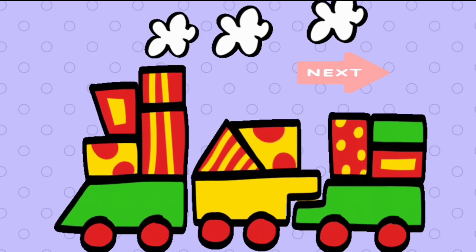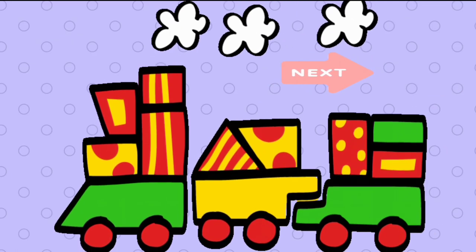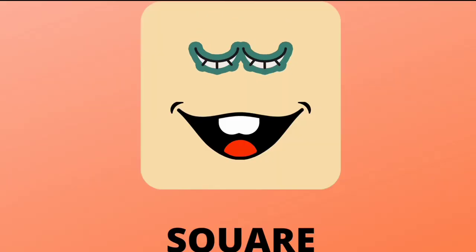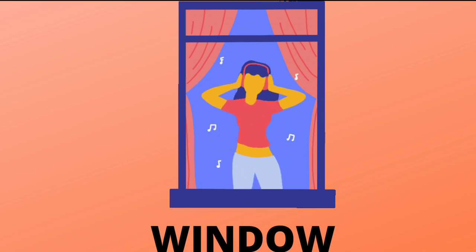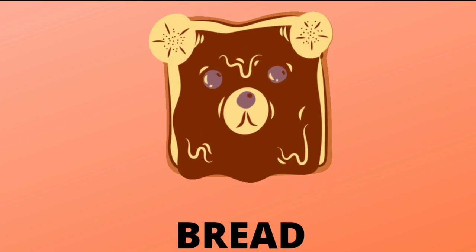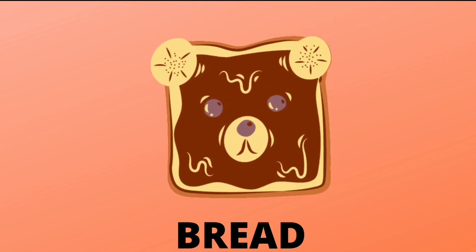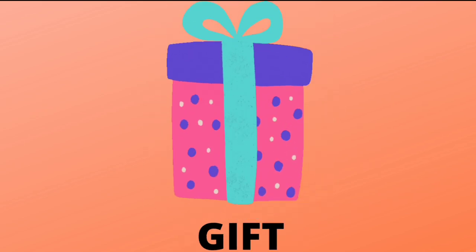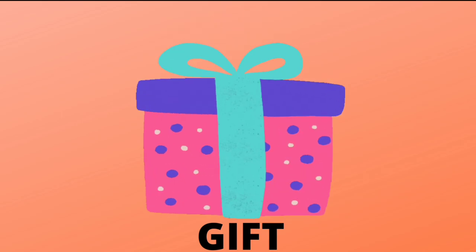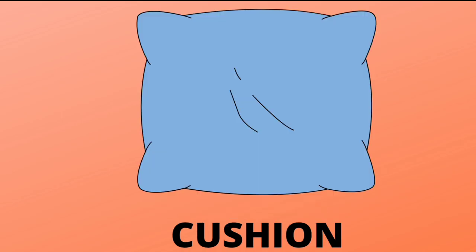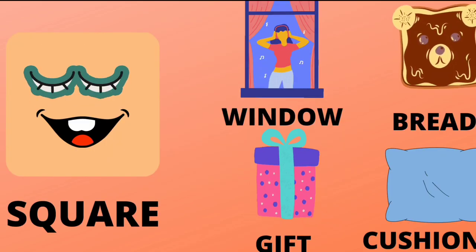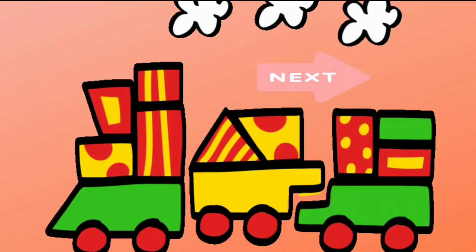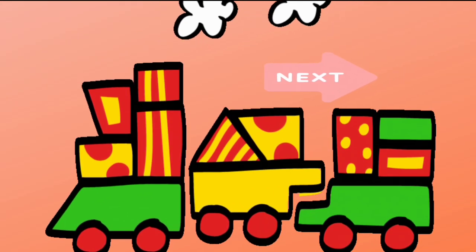Let's move to the next shape. Shape: square. Square: window. Square: frame. Square: gift. Square: cushion. Shape square — window, frame, gift, cushion.